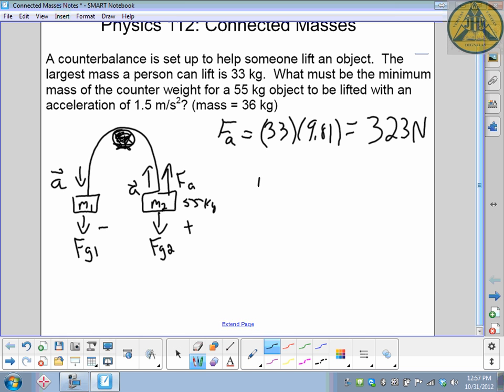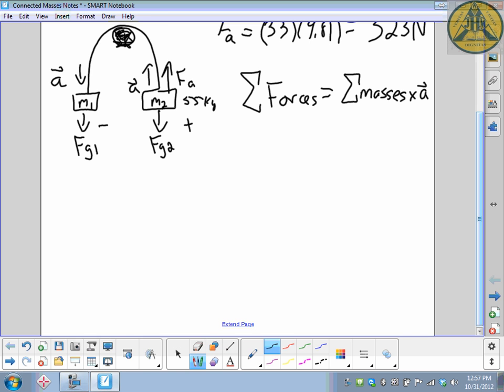The relationship we're going to use is Newton's second law. Sum of the forces, which is always the net force, equals the sum of the masses that are going to move multiplied by the acceleration. There's two masses, three forces, and an acceleration. The sum of the forces: we've got Fg1 plus Fg2 plus an applied force.